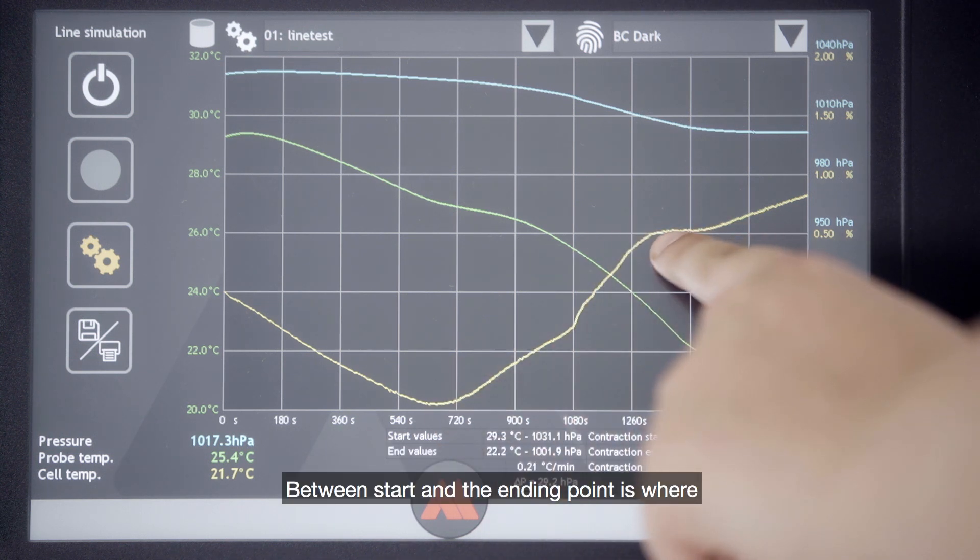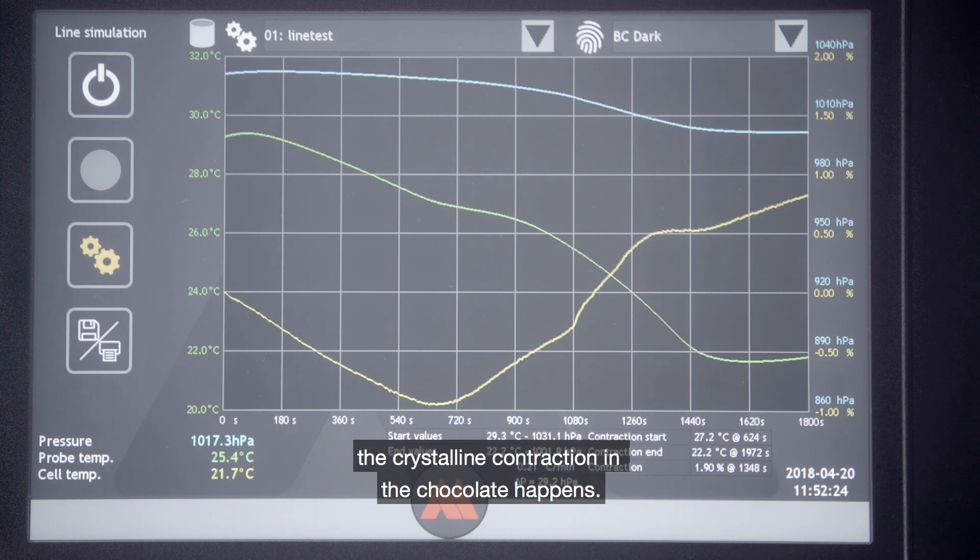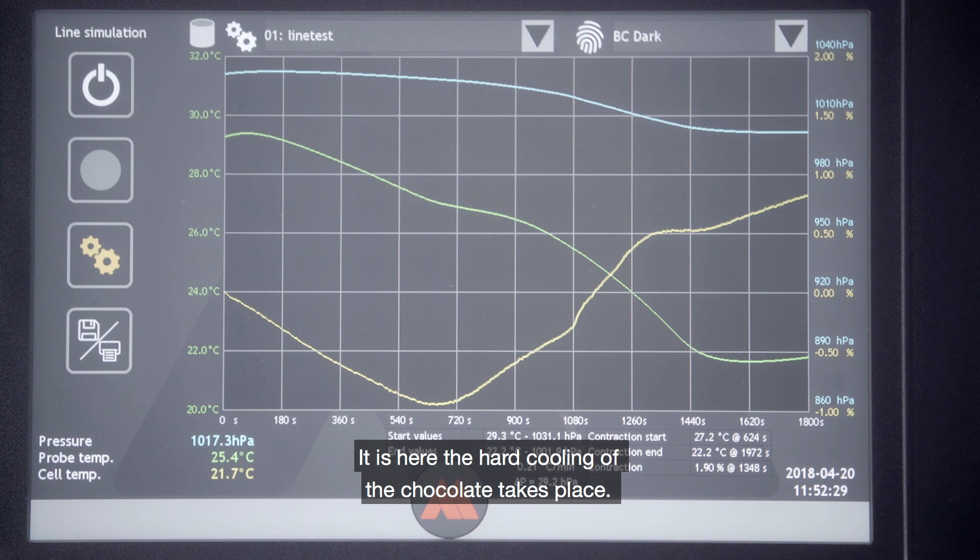Between the start and the ending point is where the crystalline contraction in the chocolate happens. This is where the hard cooling of the chocolate takes place.